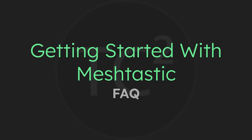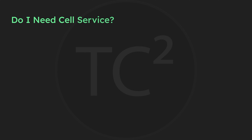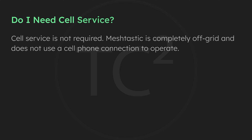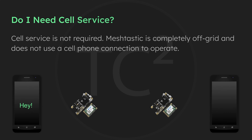The first question is: do you need cell service to use MeshTastic? The answer is no. MeshTastic is completely off-grid and works independently of cell phone towers. In the standard setup, your phone connects to the LoRa device via Bluetooth. When you send a message from the app, it goes to the LoRa device over Bluetooth, and then the LoRa radio sends that message over radio waves. The recipient's LoRa radio picks it up and sends it to their phone via Bluetooth, and the message appears on the app.